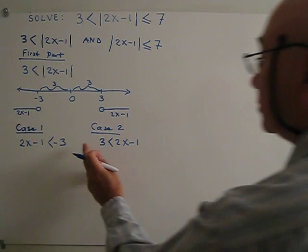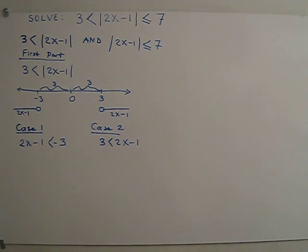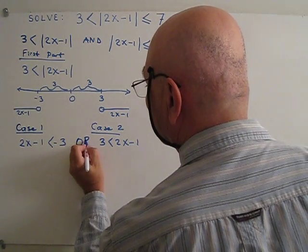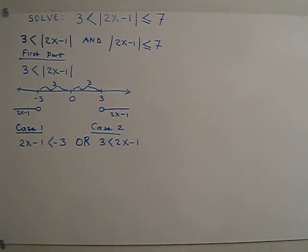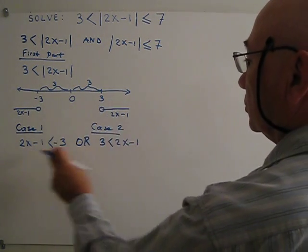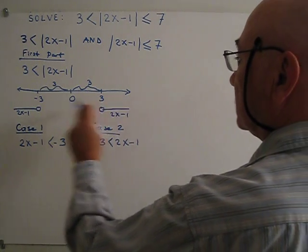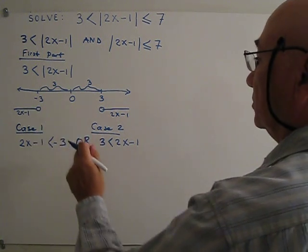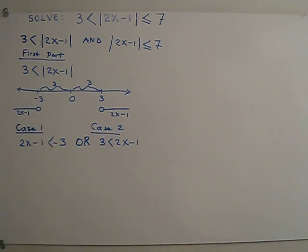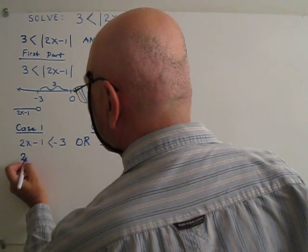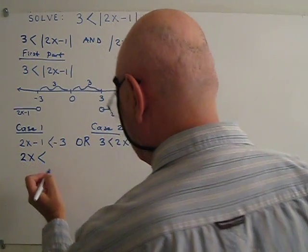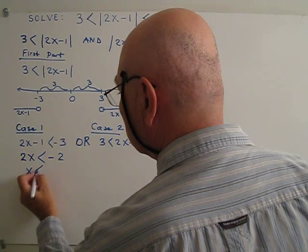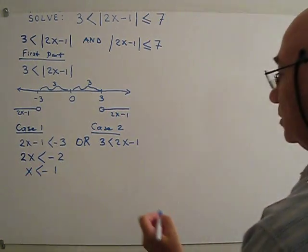How should we join these two inequalities? We should join by 'or', not 'and'. Why 'or'? Because those two inequalities are disjoint — there is no intersection. That is why we use 'or'. So if I work case 1, I get x less than negative 1.